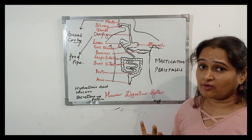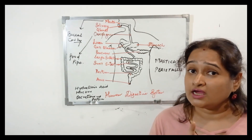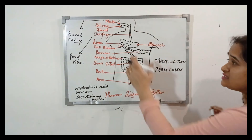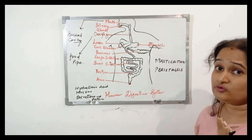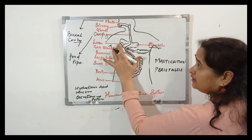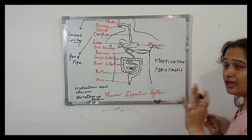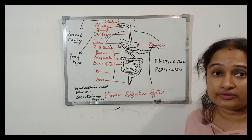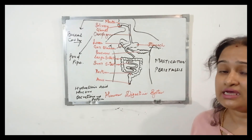The food now reaches the small intestine, which is the site of complete digestion. Along with the organs of the digestive system, there are two more associated organs: the liver and the pancreas. They are associated glands which pour their secretions into the small intestine through a duct.